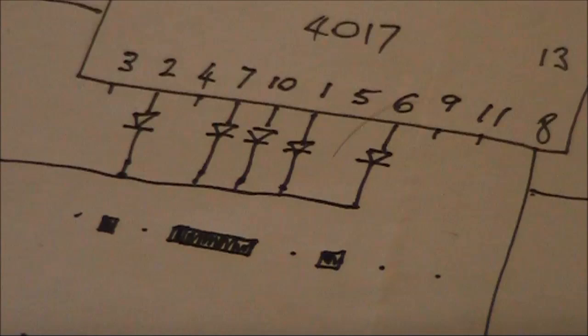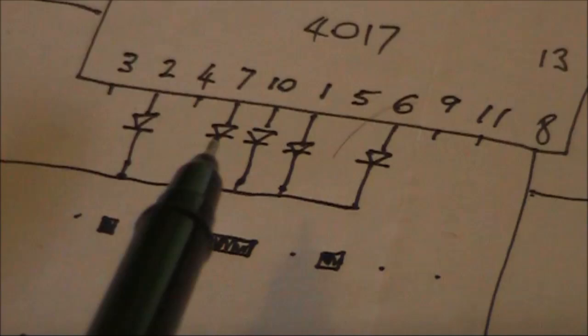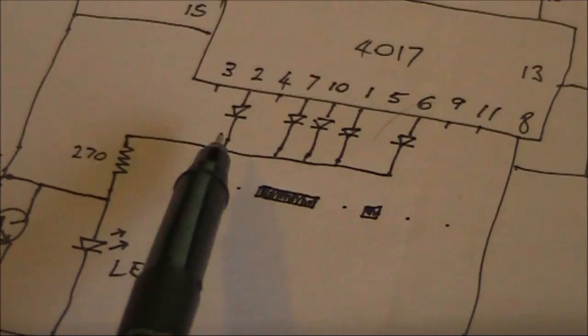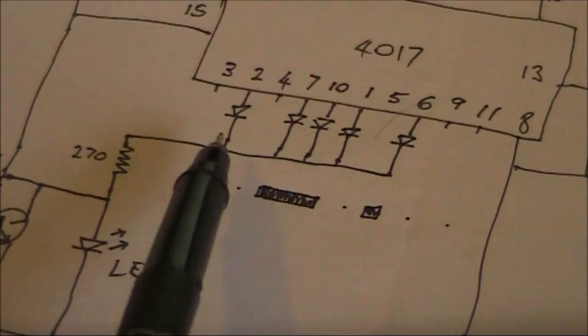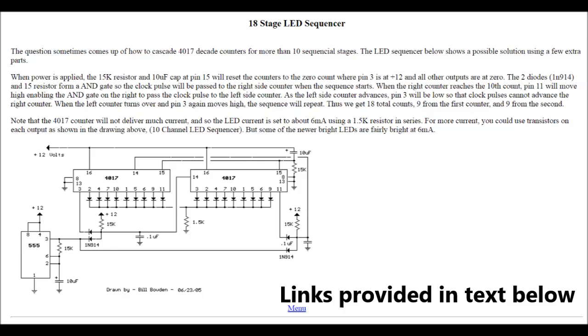The 4017 is a decade counter, meaning it can count up to ten. Think of a decade counter like a ten position rotary switch, except the input signal from the clock turns the switch around one position. There are only ten outputs, which means that there are some letters you cannot send with this simple arrangement. For that, you need to connect another 4017. Then you'll be able to get up to eighteen outputs.